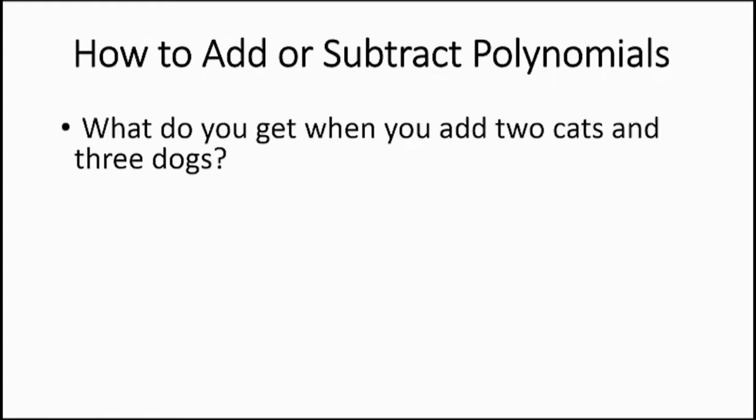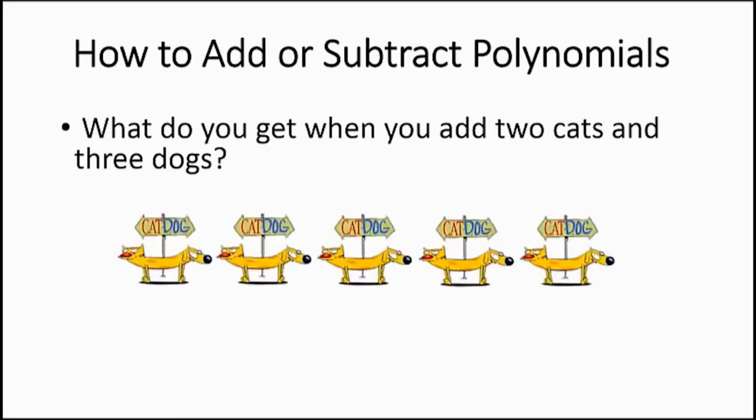How to add or subtract polynomials. What do you get when you add two cats and three dogs? Five cat-dogs? No — the cats continue to be cats and the dogs continue to be dogs. You may have five pets, but you still have two cats and three dogs. We can apply this same principle when we add polynomials — we add things with the same name.